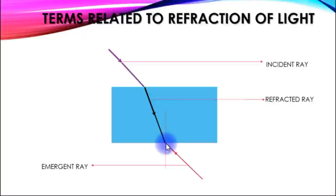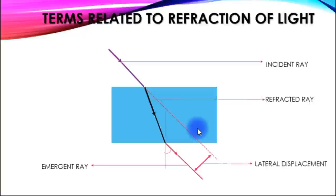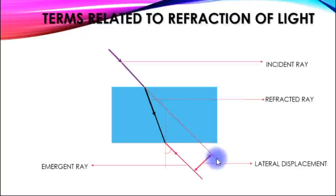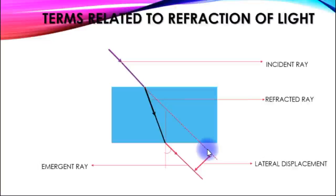This is the emergent ray. If you look at the medium, this is the emergent ray. This is the lateral displacement. This is the imaginary line. The parallel lines and the emergency ray will produce lateral displacement.